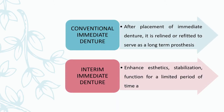There are two types of immediate denture: the conventional immediate denture (CID) and the interim immediate denture (IID). A conventional immediate denture, after placement, is relined and refitted to serve as a long-term prosthesis — this is the most commonly done type. The interim immediate denture enhances aesthetic, stabilization, and function for a limited period of time.